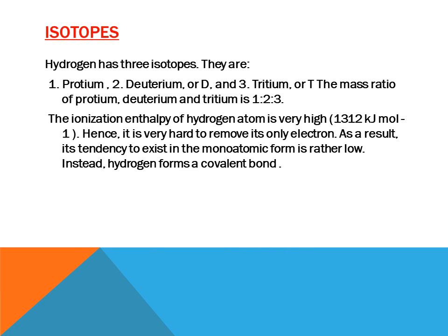What about the isotopes of hydrogen? Hydrogen has three isotopes: protium, deuterium, and tritium, with mass ratios of 1:2:3. The ionization enthalpy of the hydrogen atom is very high; hence it is very hard to remove its only one electron. That is why its tendency to exist in monoatomic form is rather very low. Instead, hydrogen forms a covalent bond.